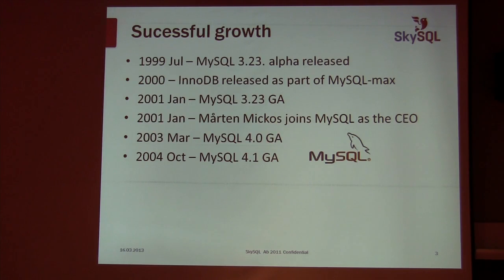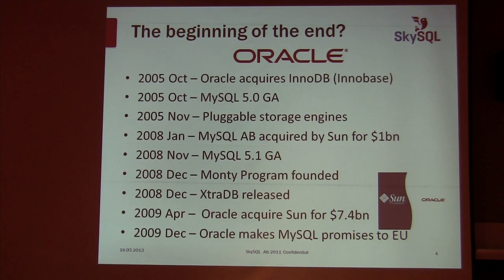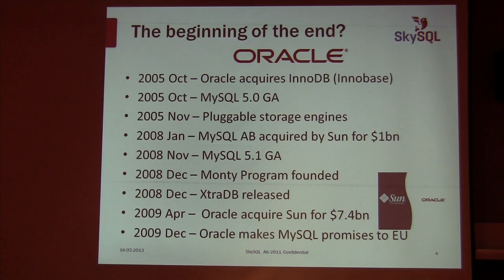Then things started happening that were not so great for MySQL. In October 2005, Oracle — yes, the big O — acquired a company called InnoBase, which was the company producing InnoDB. That was not well-received at MySQL, because InnoDB was growing to become the engine, and suddenly Oracle had acquired them. At MySQL AB this was called Black Friday, because it was announced on a Friday. MySQL 5.0 was about to go GA, and our biggest engine had just been acquired by Oracle.